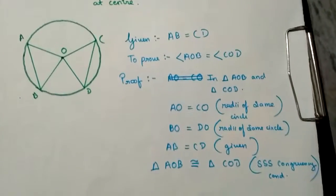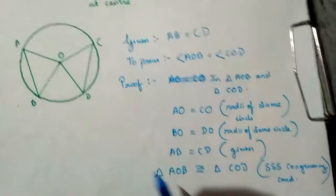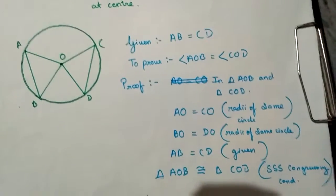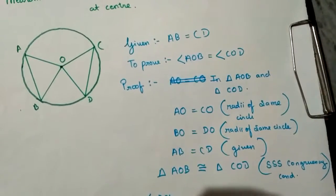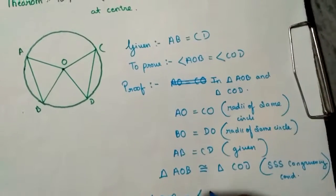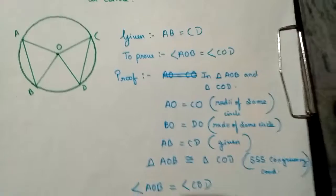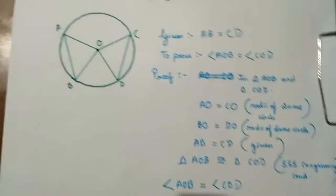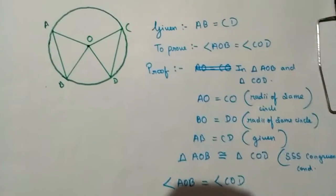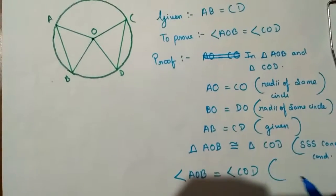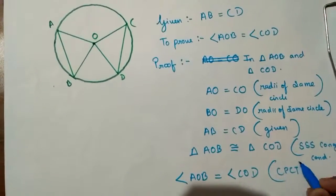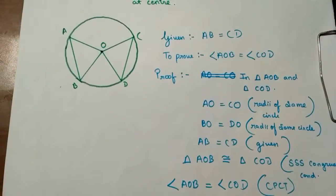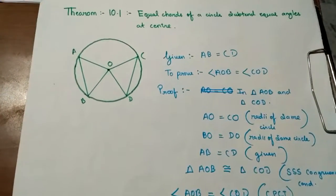By CPCT — corresponding parts of congruent triangles — we can write that angle AOB is equal to angle COD. This is exactly what we had to prove. The reason is CPCT: corresponding parts of congruent triangles. We have successfully proved it.